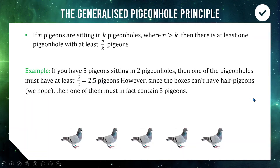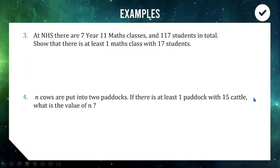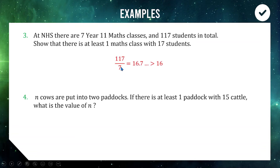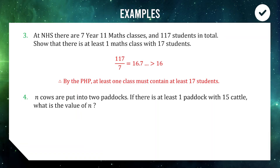Let's apply this with an example. At Narrow High School there are seven Year 11 maths classes and 117 students in total. Show that there is at least one class with 17 students. Our pigeons are the students and our pigeonholes are the classes. 117 divided by 7 is 16.7 — that's 16 with a remainder, which is larger than 16. This tells us that if shared evenly all classes would have 16 with some left over, so by the generalized pigeonhole principle at least one class must have 17 students.